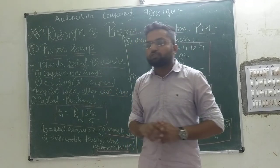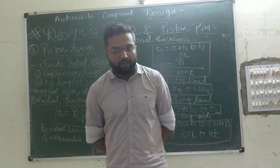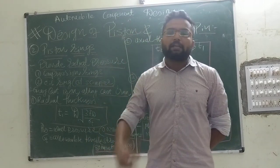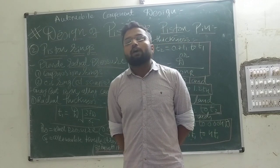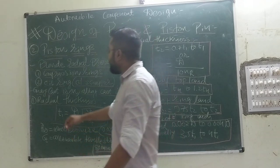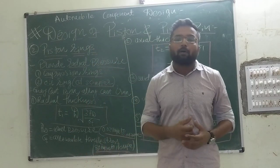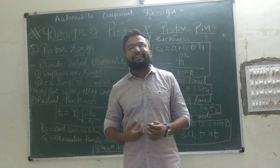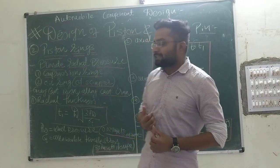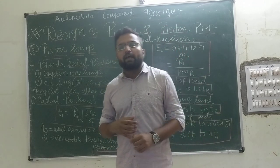Before getting into this, we should know what kind of material we are going to require. Due to the springing effect, the material should have more compression, damping, or springing effect. One is grey cast iron, or you can use nodular cast iron which has a good amount of graphite. You can also use alloy cast iron which has a good springing effect.